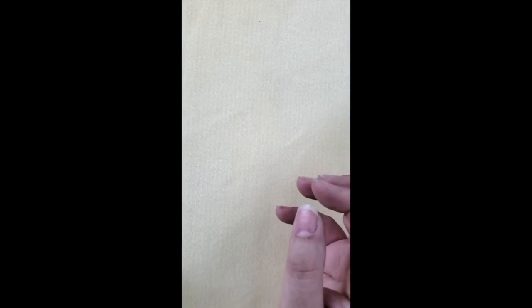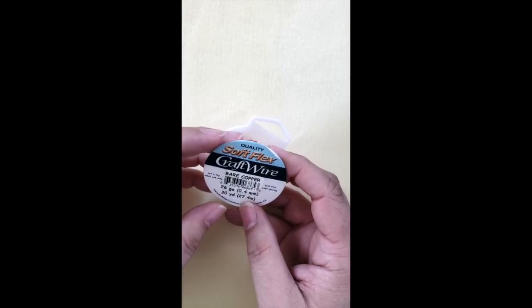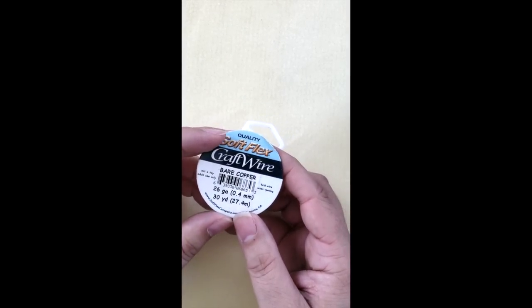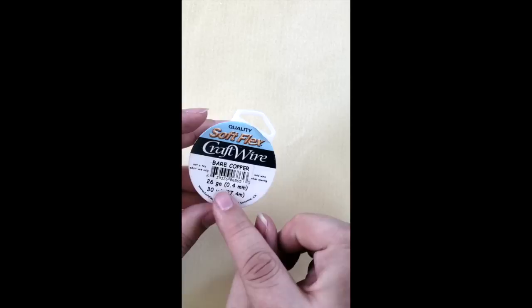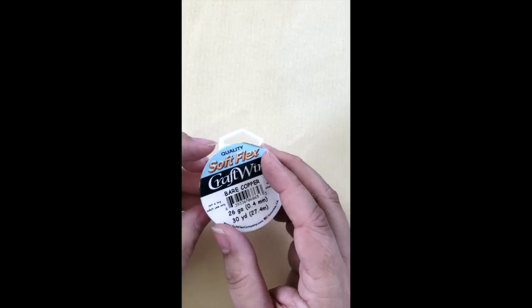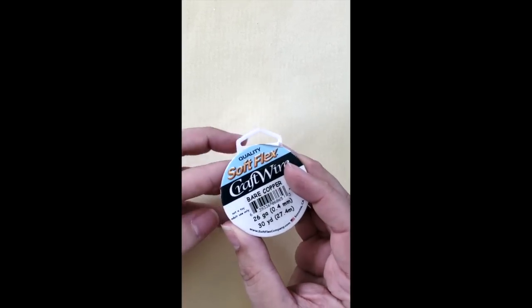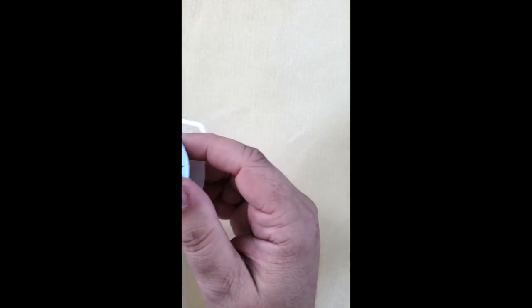All right now when you are out shopping for wire there's a couple of things that you need to know about. First you need to understand how to tell the size of your wire. Most of your projects are going to be referring to gauges. You'll see this as a number and then either GA or G. Now the gauge of the wire actually refers to how thin the wire is.